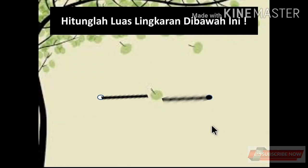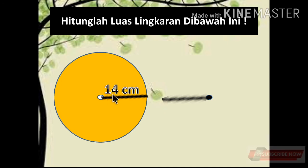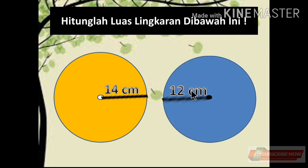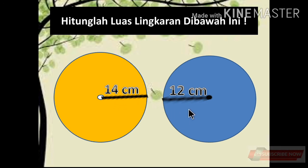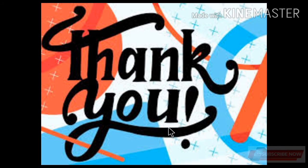Kalau sudah, coba kerjakan soal-soal di bawah ini. Hitunglah luas lingkaran: yang pertama memiliki jari-jari 14 cm, dan yang kedua memiliki jari-jari 12 cm. Kerjakan di buku tulis masing-masing dan bisa dikumpulkan saat masuk sekolah. Demikianlah pembelajaran pada kesempatan kali ini. Mudah-mudahan bermanfaat. Assalamualaikum warahmatullahi wabarakatuh.